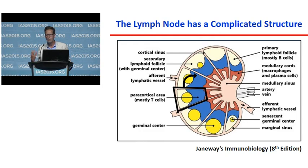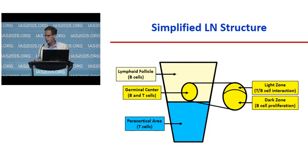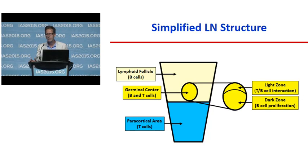If you attended Jake Estes' talk yesterday, you know there's actually a structure within the germinal center where it's broken down into a light zone where the T and B cells interact, and a dark zone where the B cells go to proliferate before they go back to the light zone and re-interact with T cells. So that's where the main interactions occur between T and B cells.